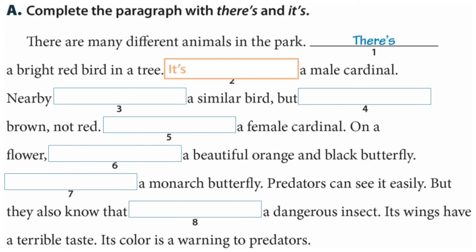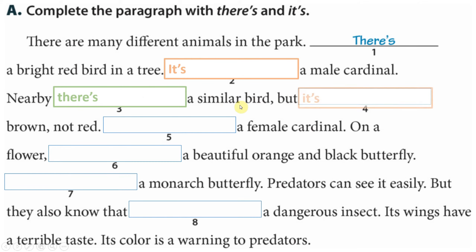For number three, in this sentence we can read: nearby, a similar bird, but brown, not red. This similar bird is another bird — it's not the same bird from the previous sentence, so we use 'there is'. But 'brown not red' — of course we need to refer here to this bird; we're describing it, so we use 'it's'.